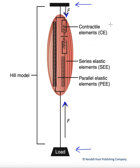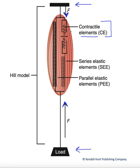The three main components of the Hill model are the contractile elements. That's our tension-developing molecular components of the muscle — the sarcomeres. Any of the sarcomeres that are active during a particular contraction would be involved in this contractile element component. So this is where our active shortening is going to occur.